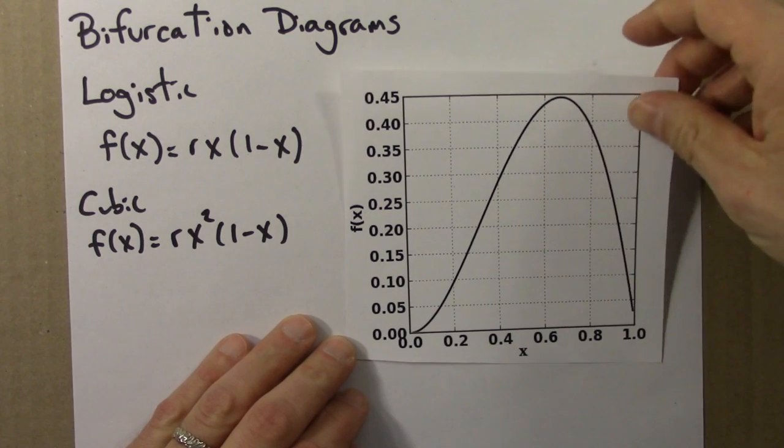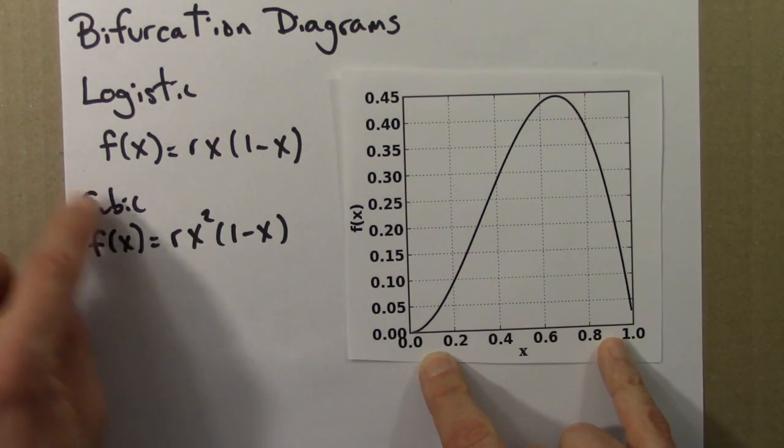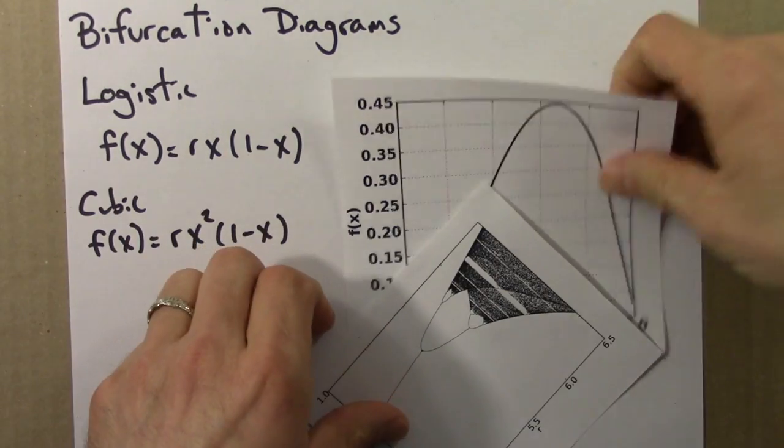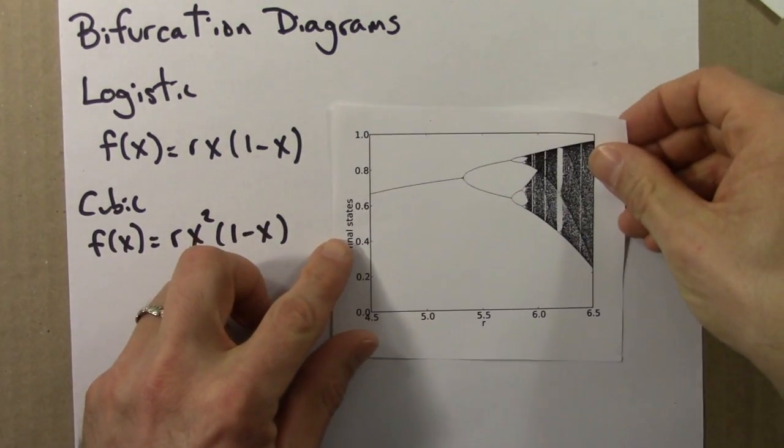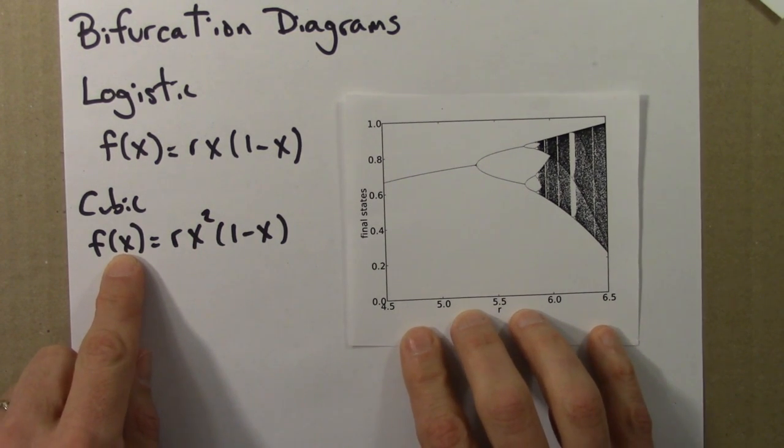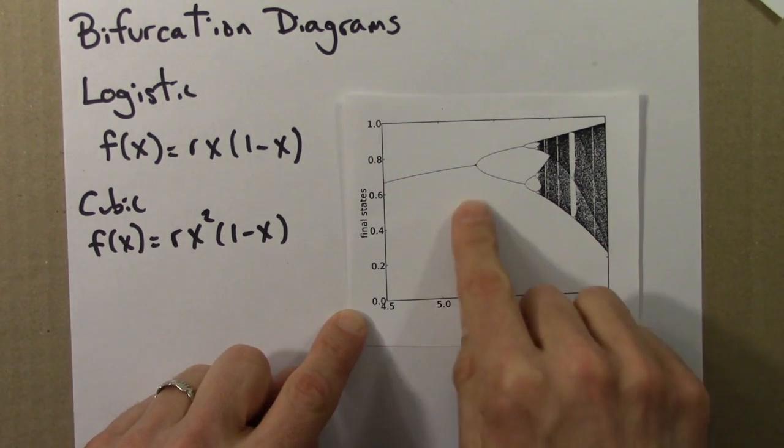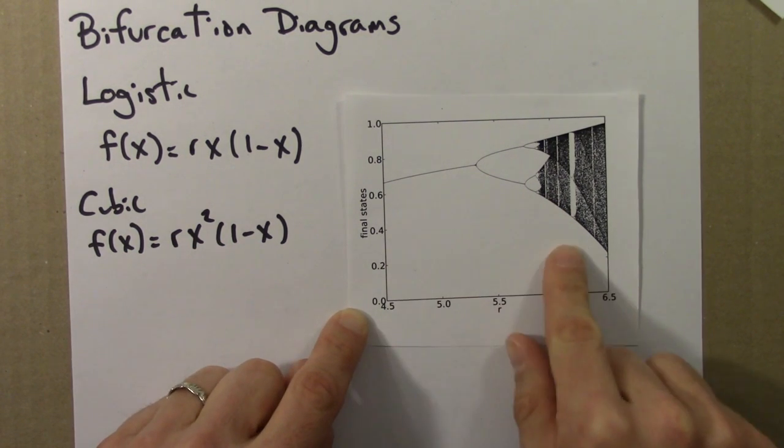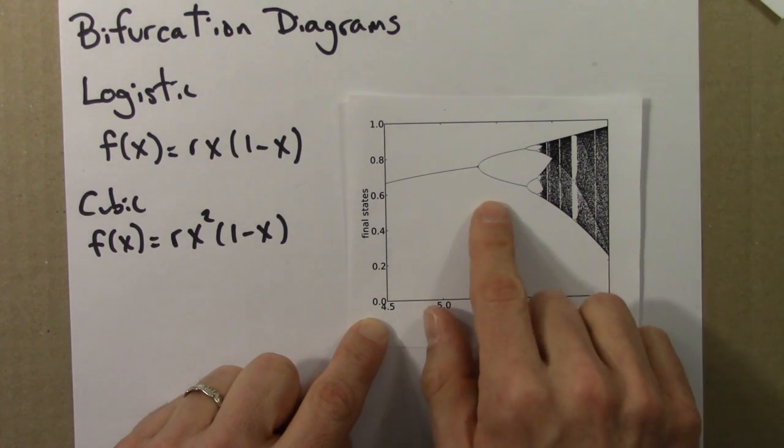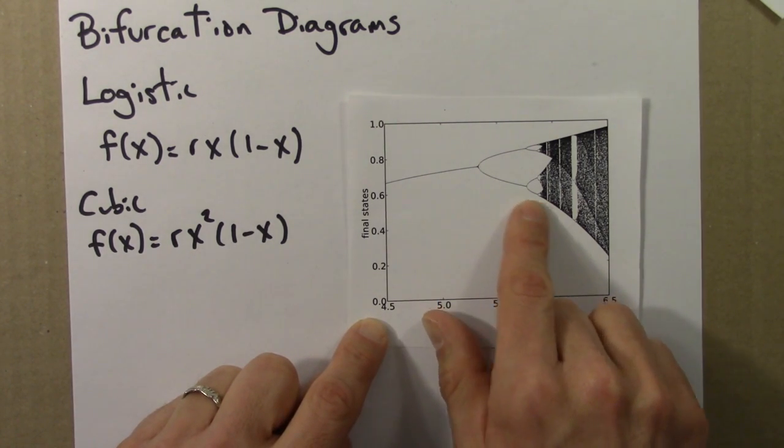We can make a bifurcation diagram for this, just like we did for the logistic equation. And here's the result of doing that. So this is a bifurcation diagram for the cubic equation. It's kind of similar, not identical to that for the logistic equation. But the same general features are evident: period doubling, period 1 to 2, 2 to 4.